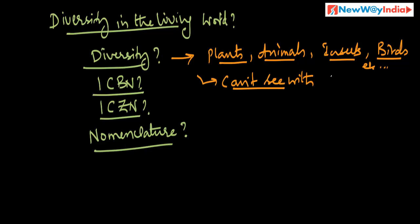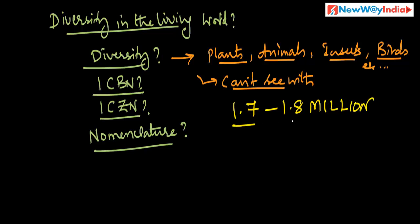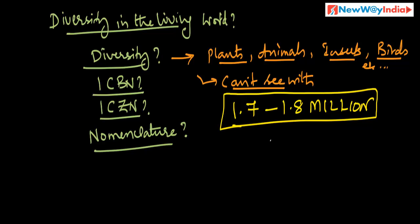Like unicellular organisms — bacteria, amoeba — many organisms you can't see with your naked eye. Like this, there is a huge differentiation in the plants, animals, insects, birds, and unicellular organisms. There are around 1.7 to 1.8 million organisms that are known and described till today — that is a rough estimate.